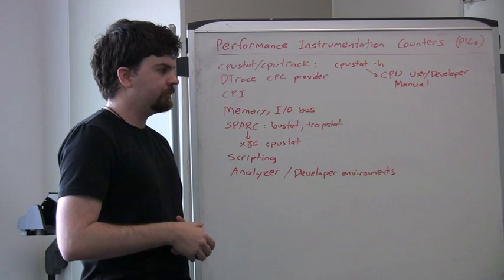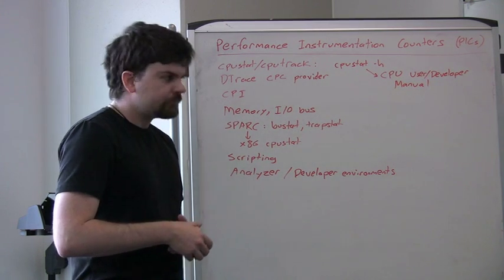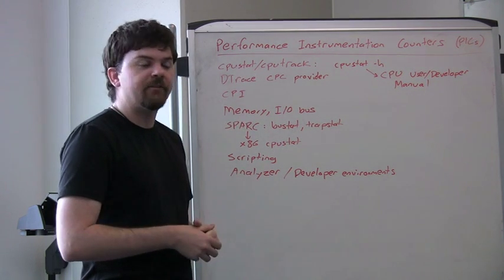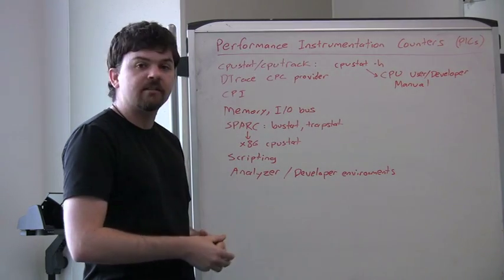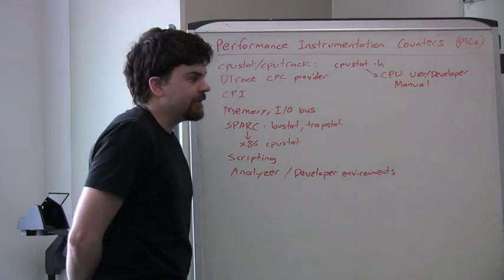The counters are there for the manufacturers so they can check things. Also, even once you think you've understood the meaning of a counter, you still have to be very critical of the experiments you're running and take a step back, because they're not necessarily accurate representations. If it's a cache miss, sometimes it's going to be cache misses but maybe 100x more or less than the actual. The relative values of the counters are very interesting to look at.